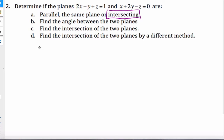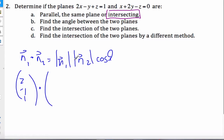To find the angle between the two normals, I'm going to use the idea of the dot product. Normal one dot normal two equals the magnitude of normal one times the magnitude of normal two cosine the angle between them. So 2, -1, 1 dot 1, 2, -1 equals square root of 6 times square root of 6 cosine theta.